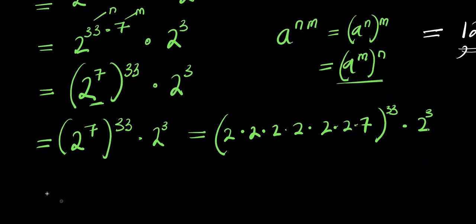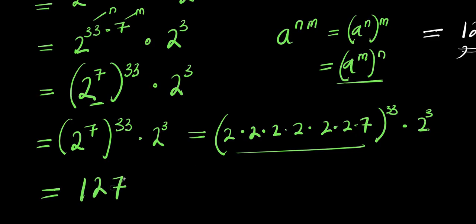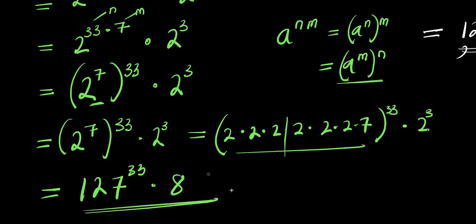From here, 2 to the power of 3 is 2 times 2 times 2, which equals 8. So 2 to the power of 234 equals 128 to the power of 33 times 8.